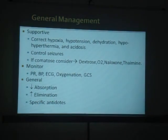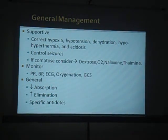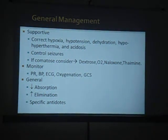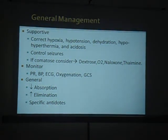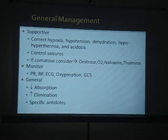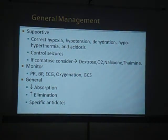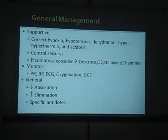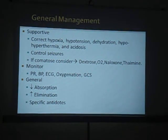General measures include decreasing absorption. Decreasing absorption means we need to remove the organophosphorus poison - if the pesticide is on the patient's clothes or body, we need to remove their clothes and prevent further exposure, because organophosphorus poisons can be absorbed through skin and mucous membranes. Gastric lavage can also decrease absorption if it is a non-corrosive poisoning. We can give an emetic agent - salt water or other emetic agents - so that the person vomits out whatever poison is present.